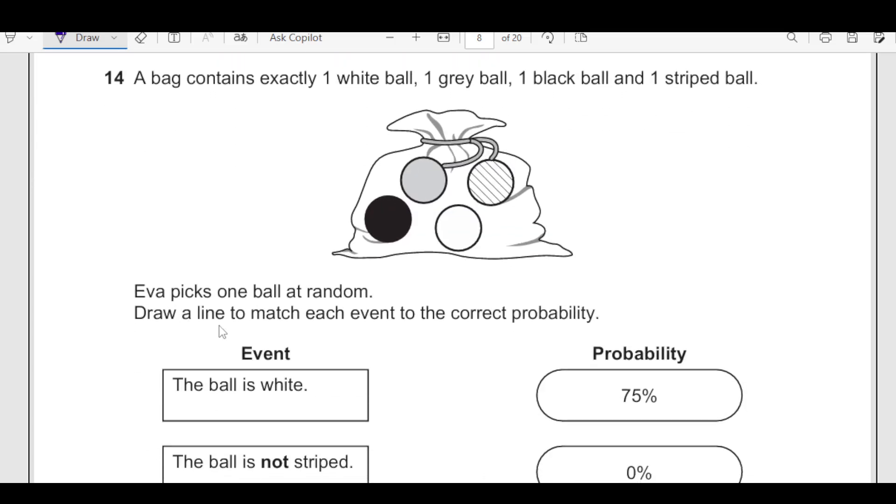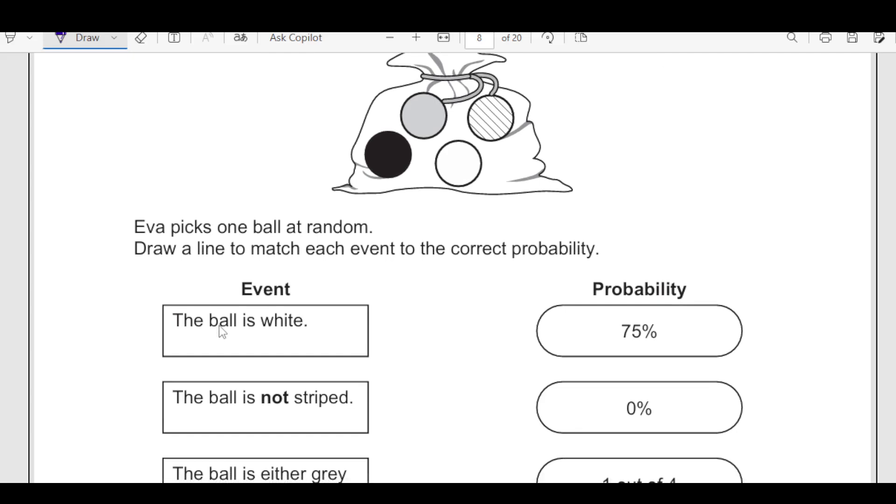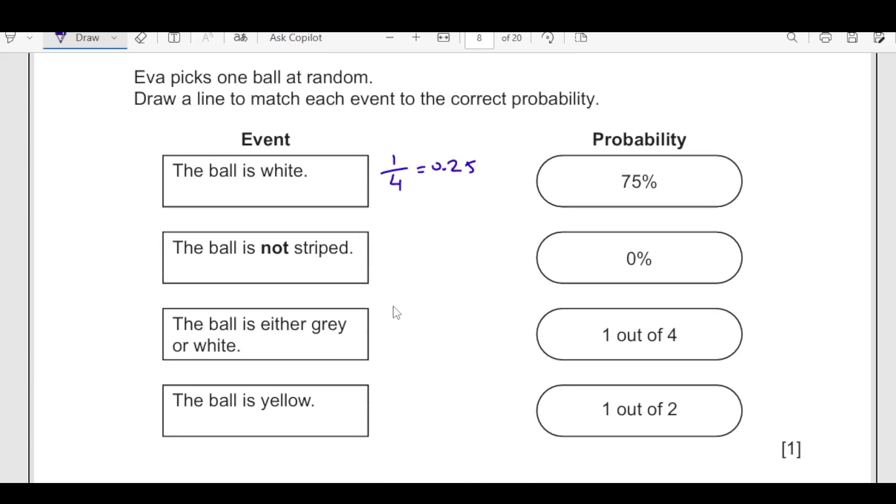Number 14, a bag contains exactly one white ball, one grey, one black and one striped ball. You can see we have the balls here. Ava picks one ball at random, draw a line to match each event to the correct probability. The ball is white, we have one white ball out of 4. So 1 over 4 is 0.25. We will match this to 0.25.